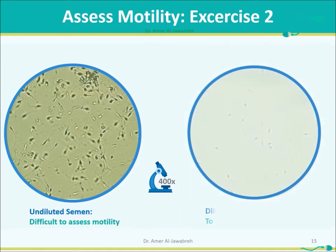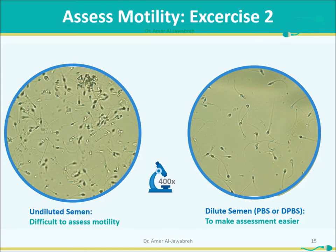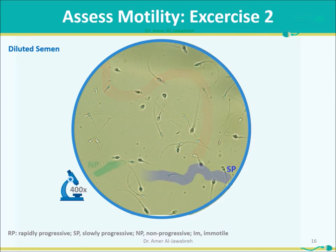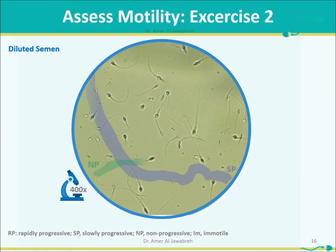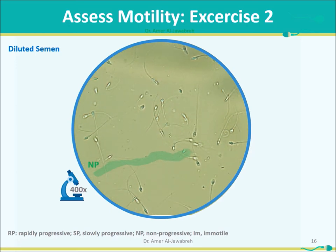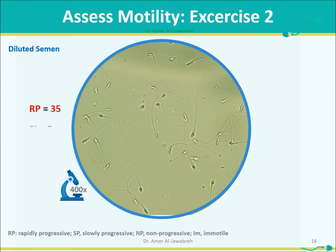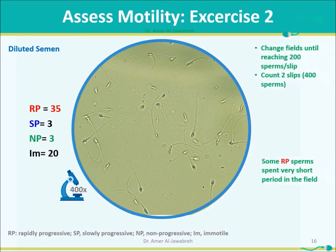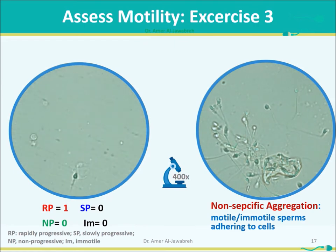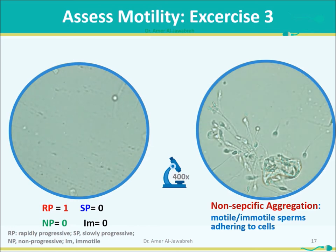Exercise 2 expected results: RP 35, SP 3, NP 3, Immotile 20. Exercise 3: RP 1, SP 0, NP 0, Immotile 0. Non-specific aggregation — motile or immotile sperms adhering to cells — should also be noted during assessment.